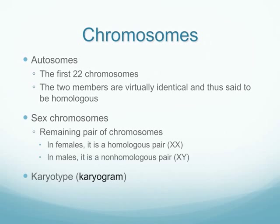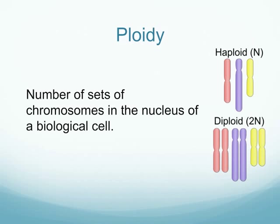Autosomes make up the first 22 chromosomes, and then we have our sex chromosomes that make up the remaining pair. Ploidy refers to the number of sets of chromosomes in the nucleus of a biological cell. We have diploid cells in our somatic cells and haploid cells in our gametes. In some genetic situations we may have more than the normal number — extra chromosomes — so we use the term ploidy to refer to the number of chromosomes contained.